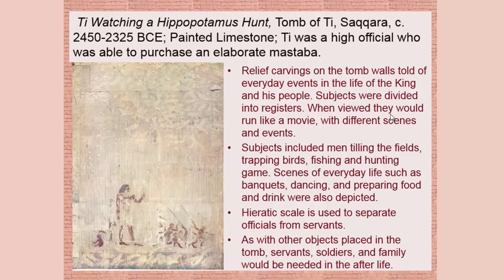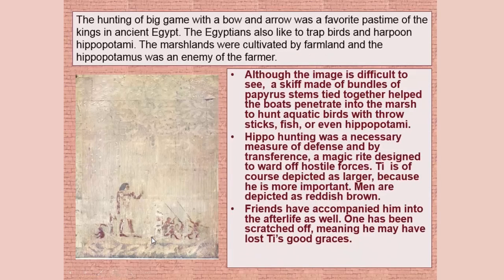The subjects are all divided into registers, which is a common thing we've seen in other art forms. All over these tombs there'd be men in the fields, birds, fishing, hunting game, banquets — all kinds of scenes of everyday life — and they use hieratic scale to separate the officials from the servants. If you notice there's a figure scratched out here — that's because he probably lost Ti's good graces, so they came in and chopped his image out. Ti didn't want to spend the afterlife with this person, which just humanizes them.